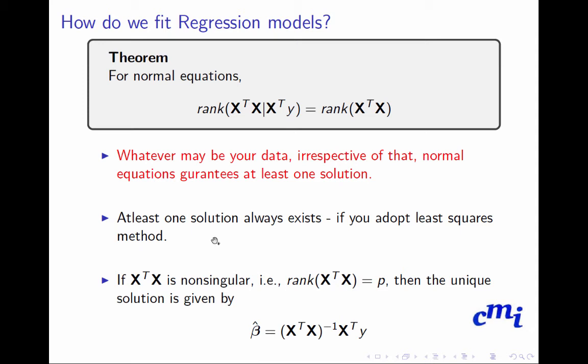And hence, it gives me at least one solution. All I have to ensure is that x transpose x is non-singular, so rank of x transpose x is p. Then the unique solution is beta hat equals x transpose x inverse x transpose y.